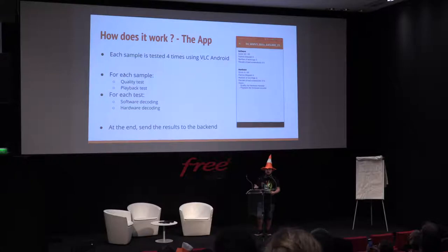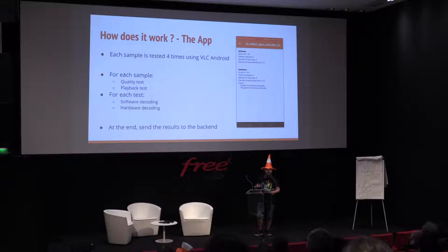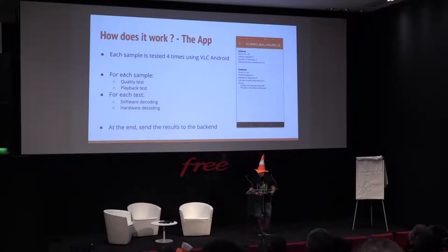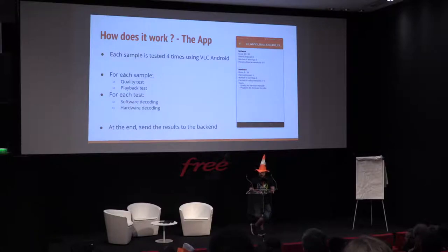For the quality tests, we jump into the file — usually about three times — taking three different seek jumps in several places. The goal is to determine if we have artifacts, if the seek doesn't work, or if it jumps to a bad frame. The playback test is just as it's called: playback. We collect statistics like late frames and errors, which are related to dropped frames. All of that sums up to a score for that specific sample.